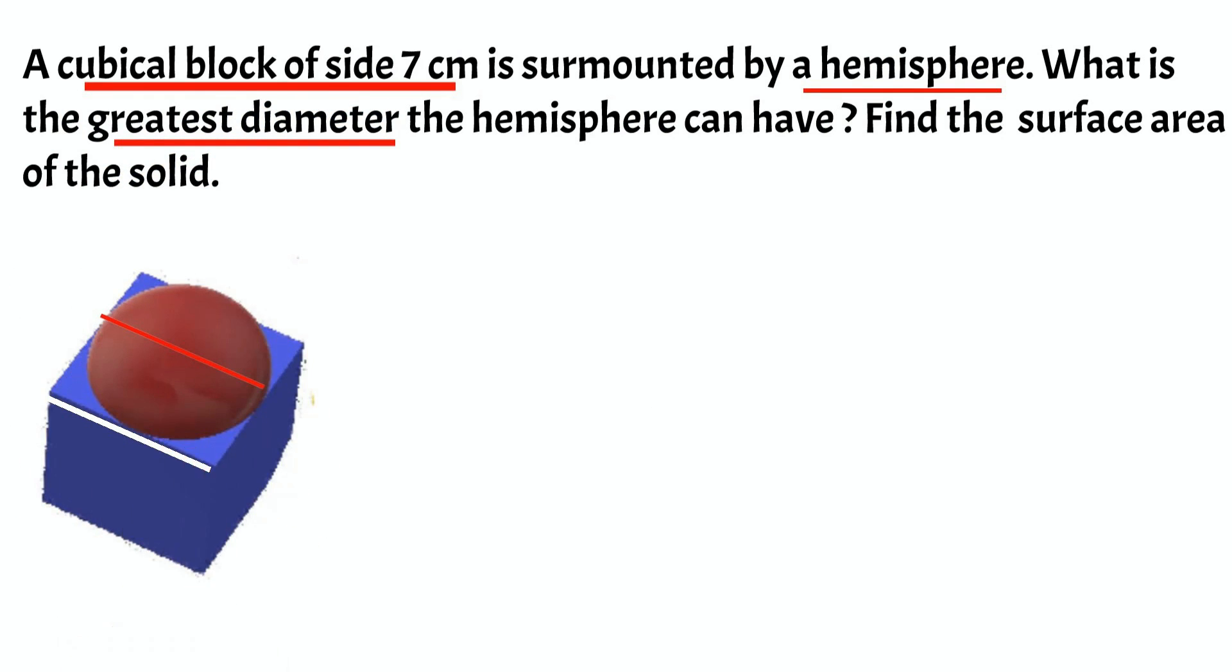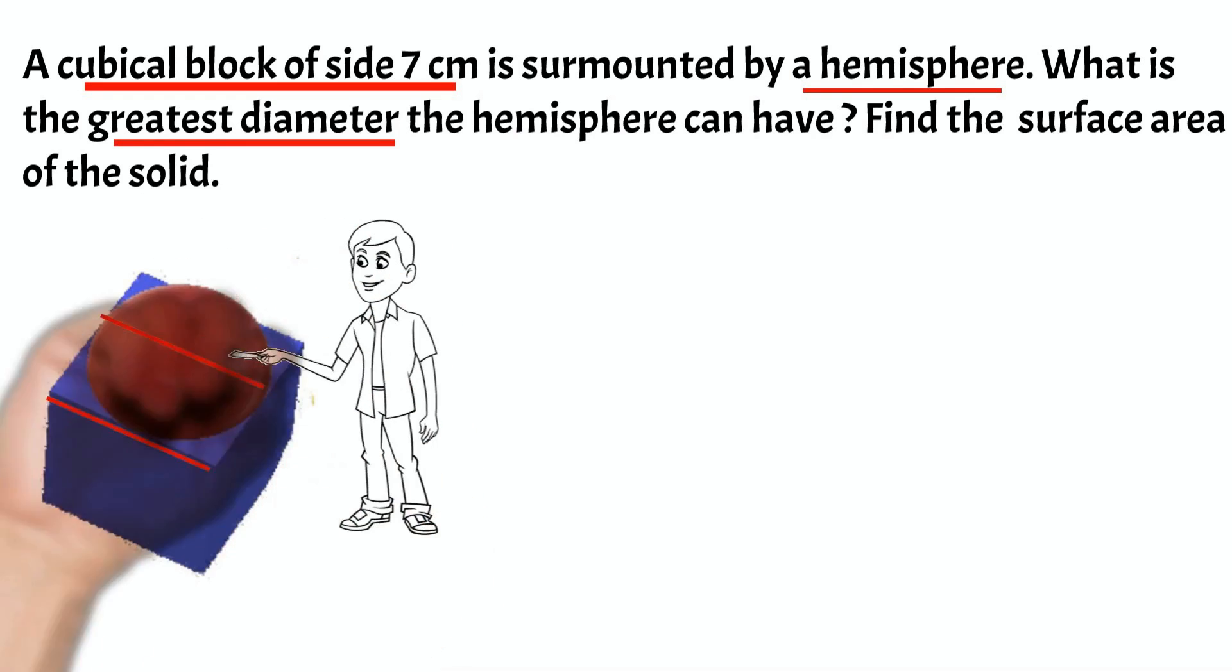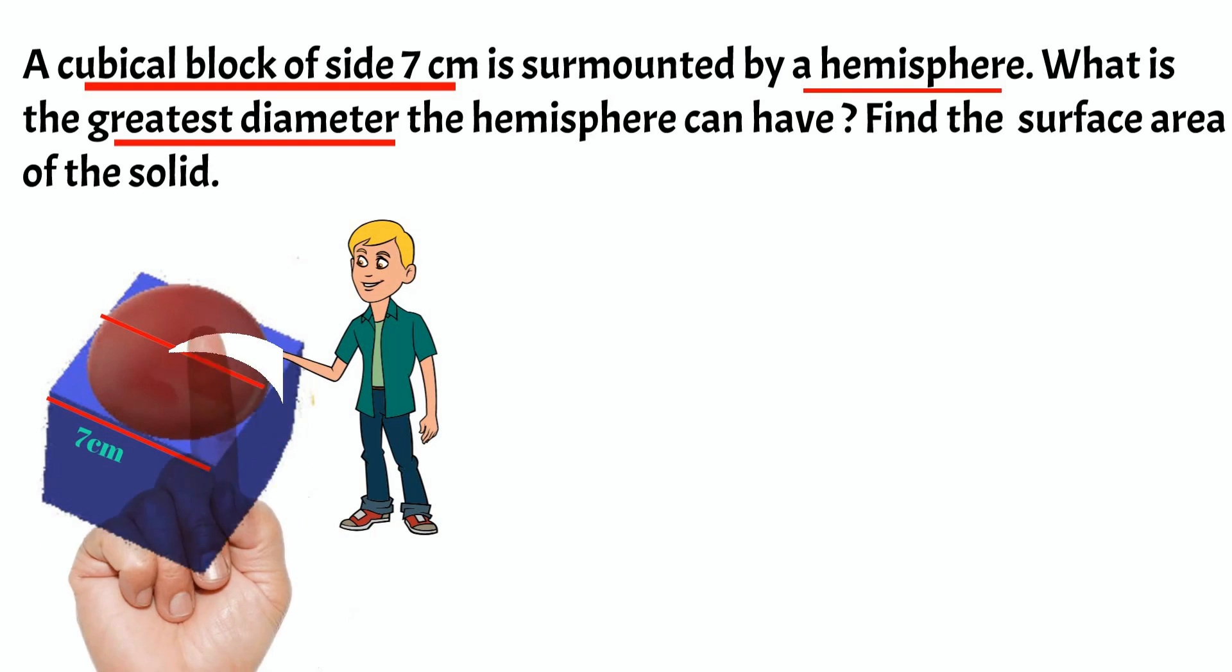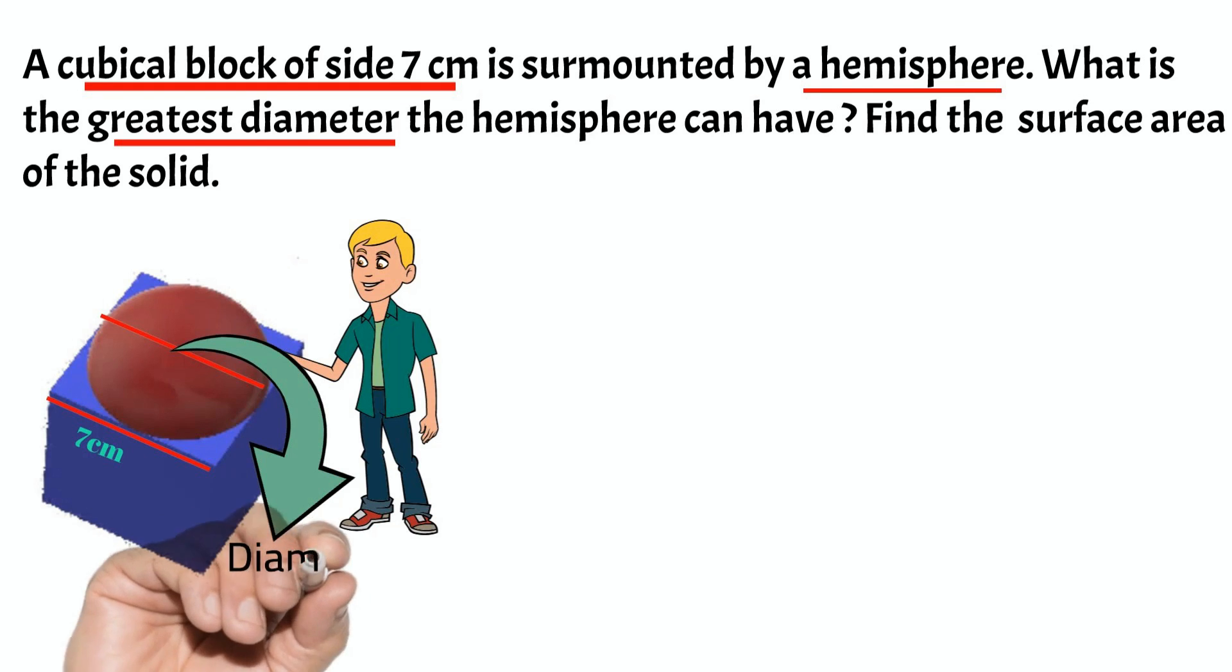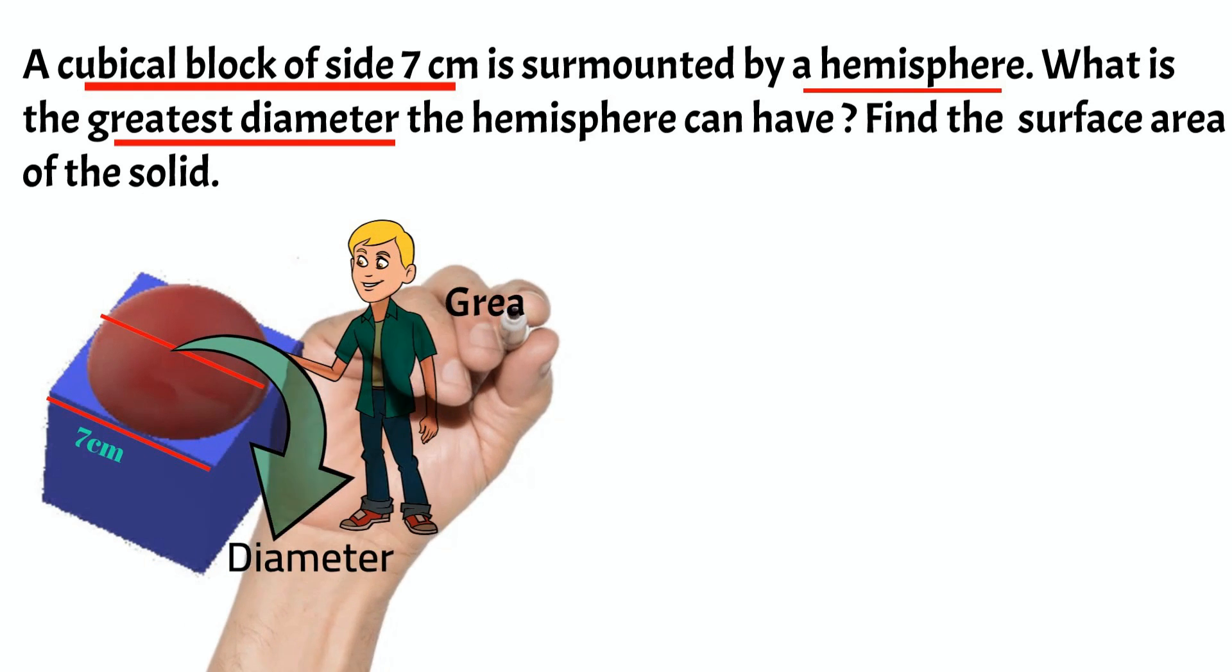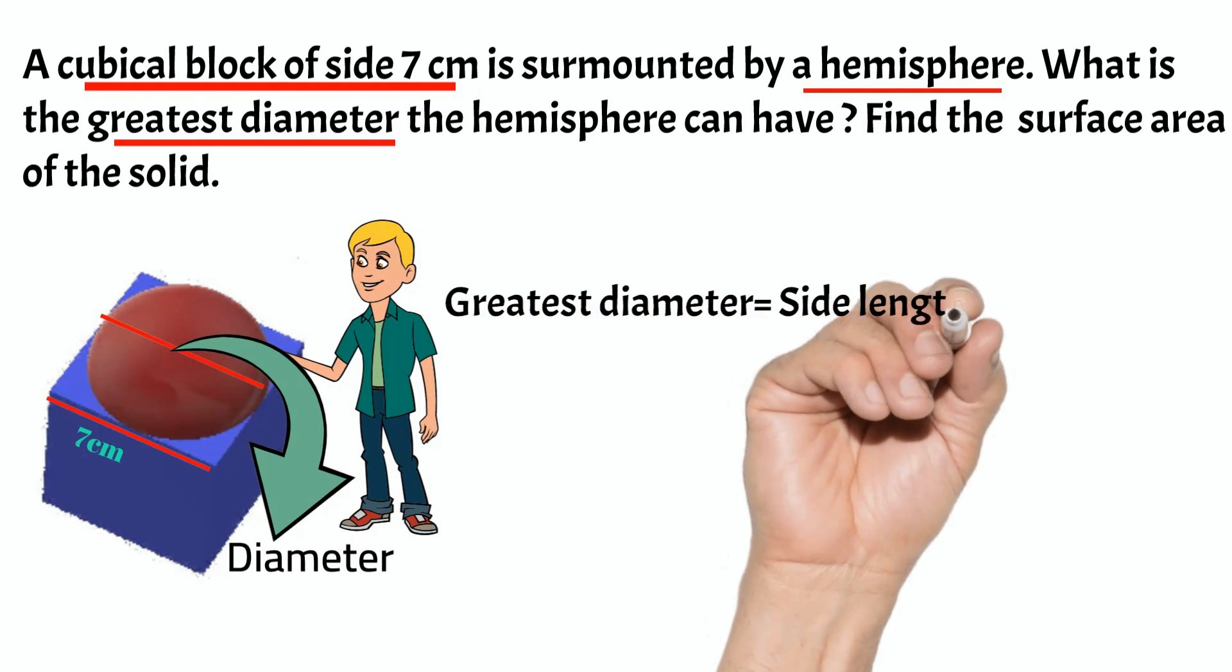So the greatest diameter, diameter of the hemisphere, equals side of the cube equals 7 cm.